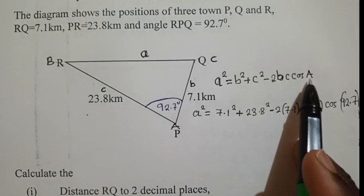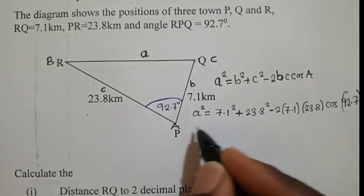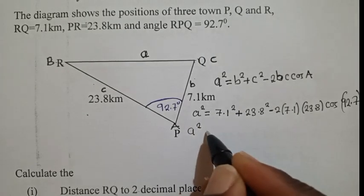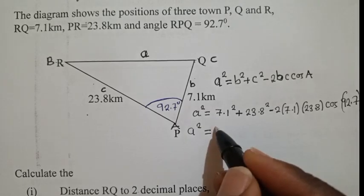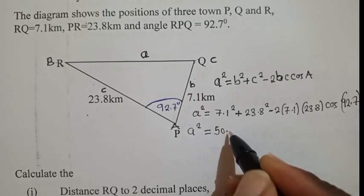So how do we get to know that this is an angle? Remember, the capital letters, they represent angles. Okay. So now, we can now punch on our calculator. What is our 7 squared? So we maintain our a². And then we say 7 squared. 7 squared, of course, it's 50.41.